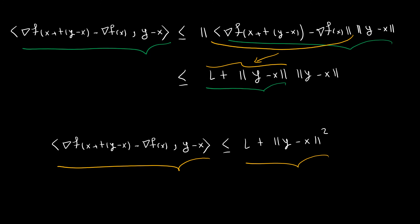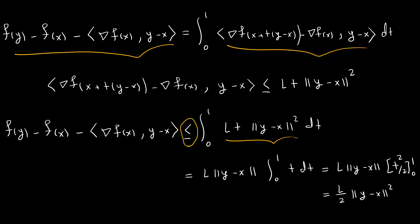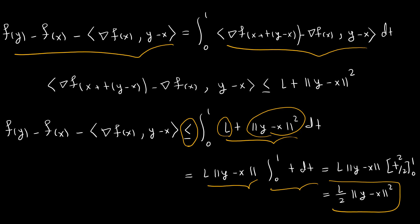Now we can do the last step. We had this inequality and bounded the inner product. Since L and the norm of y minus x do not depend on t, we can pull them out, leaving the integral from 0 to 1 of t, which equals t squared over 2 evaluated from 0 to 1, which is just one half. Therefore we get this final expression.